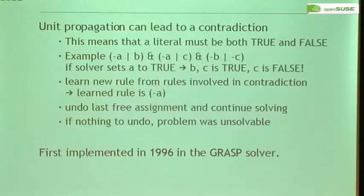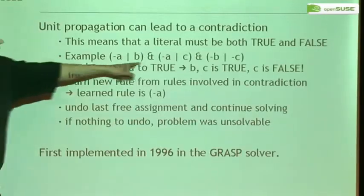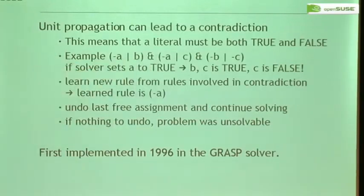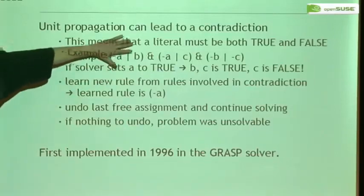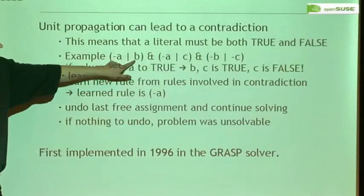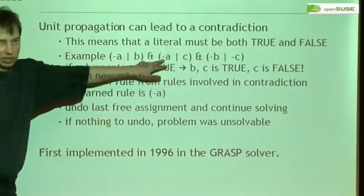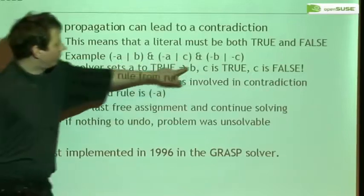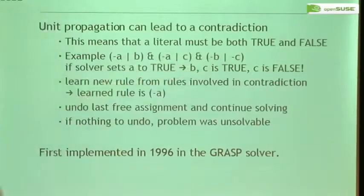Of course, as with any normal solving algorithm, you sometimes get contradictions. The same is true with SAT solving — unit propagation can lead to contradictions. Here's an example: say the SAT solver chose to install A. This rule is unit so we know B is true. This other rule is unit because A is true, so C is also true. Then we have a rule that says B conflicts with C — but we just established that we have to install both B and C. This is a contradiction.